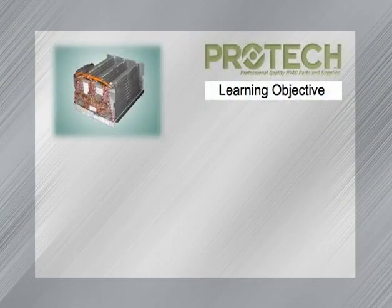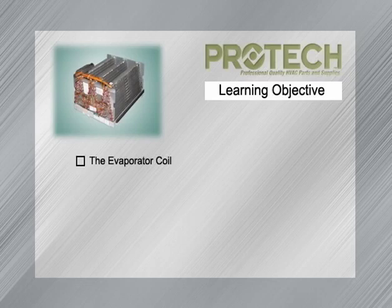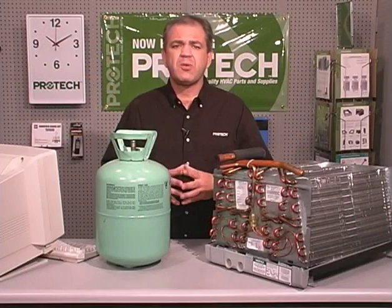In our prior training segments we learned that hot goes to cold, and we learned that to maximize heat transfer we have to cause a change of state. In this training segment we're going to introduce you to the coil called the evaporator coil — where all the heat from the conditioned space is absorbed into the refrigerant so it can be transferred to the outdoor air and rejected. You're going to learn how evaporator coils transfer heat and about special devices called metering devices.